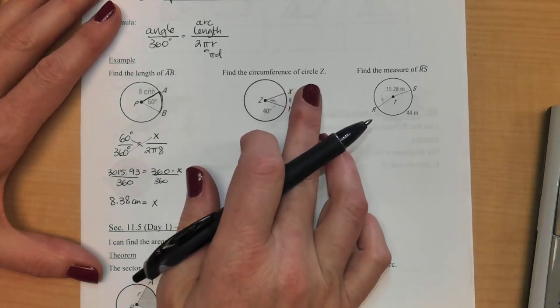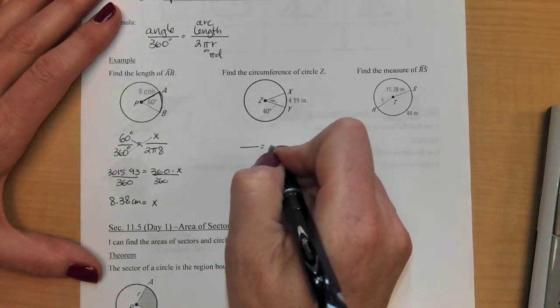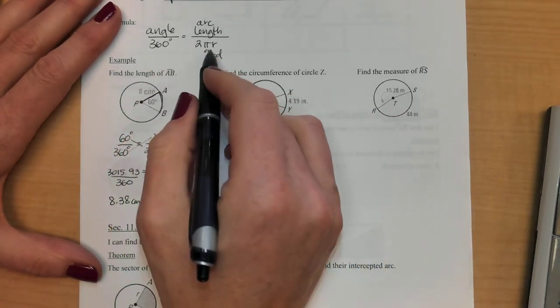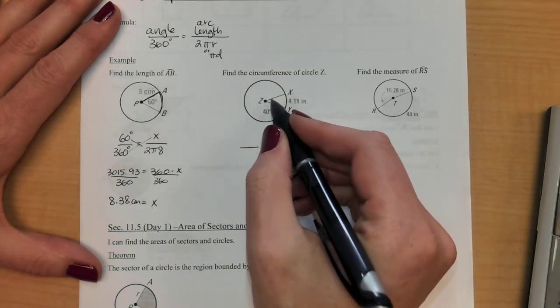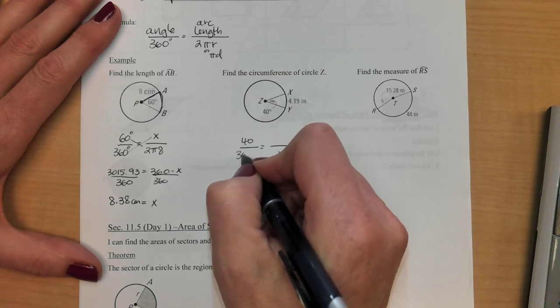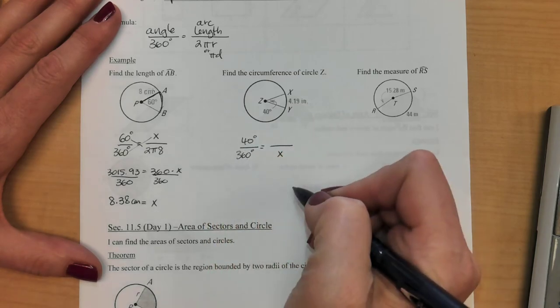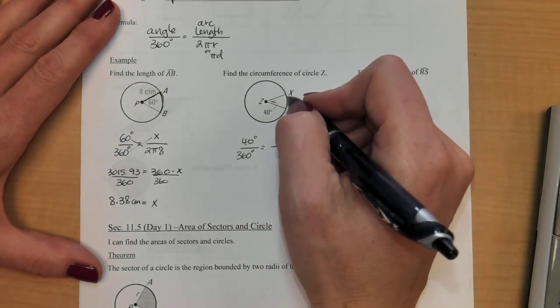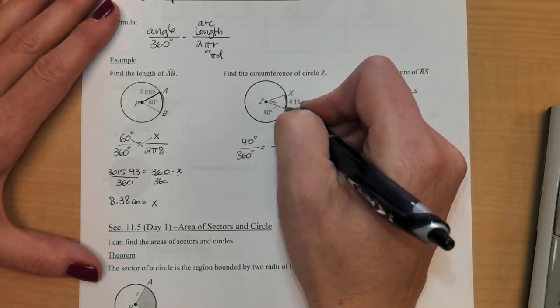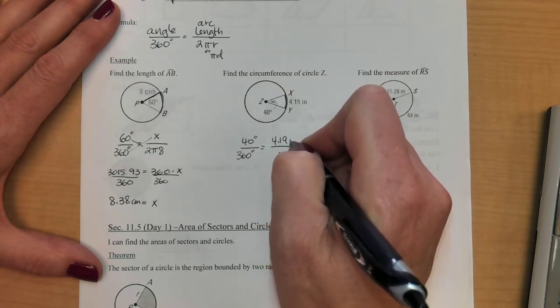Next one says find the circumference of circle Z. So I'm going to set up my proportion again. Circumference happens right here, so I'm going to put an x there. I've got my angle which is 40 over 360. That will never—this 360 never changes. It's always a part of the formula. And then up here we've got our arc length and they actually gave it to us. They're telling us that this little piece is 4.19 inches.